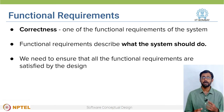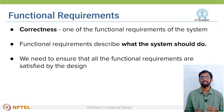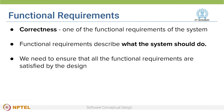Correctness is one of the functional requirements of the system. Functional requirements describe what the system should do. We need to ensure that all the functional requirements are satisfied by the design. So checking if the functional requirements are satisfied is one way to evaluate the given design. But is it the only way? Are there other perspectives we need to consider while evaluating a given design?